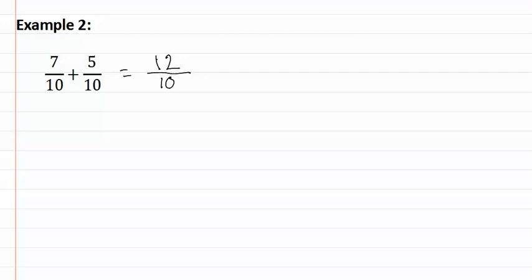Now, in this problem we must reduce. We know that both the numerator and the denominator can divide by two, which will give us six-fifths. This is our final reduced answer.